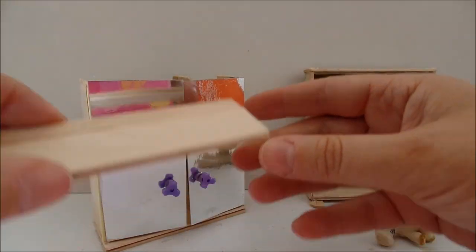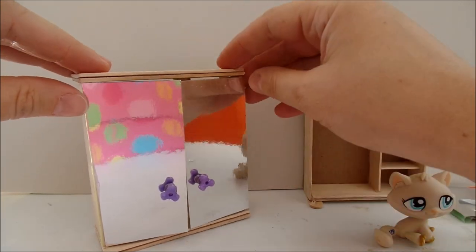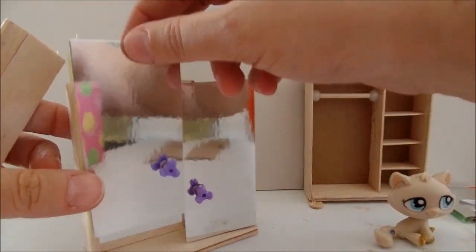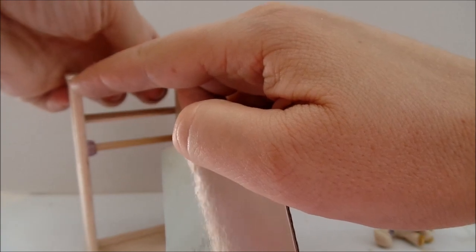To finish the closet, take the part that we prepared in advance and glue it at the top of the closet. Make sure that the dowels are glued to the popsicle.